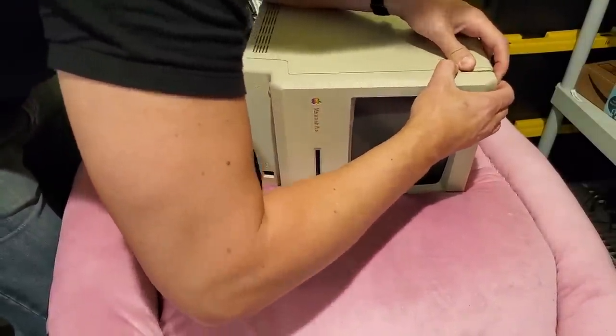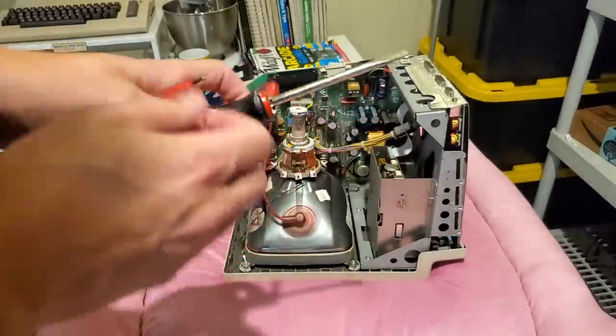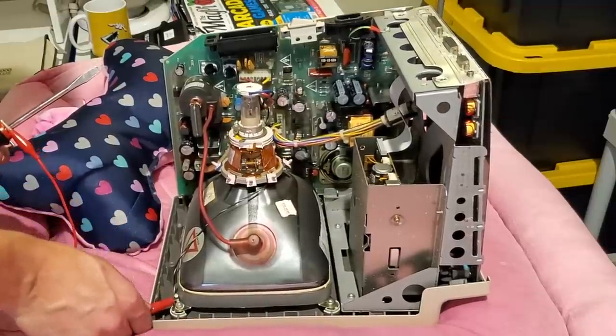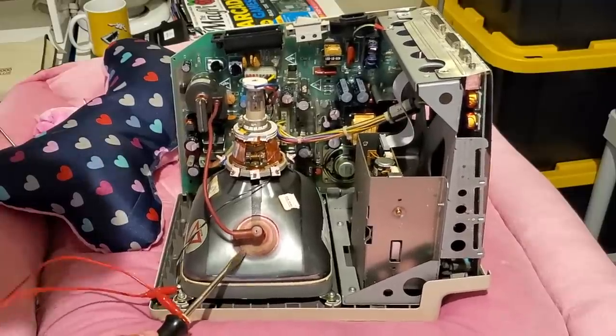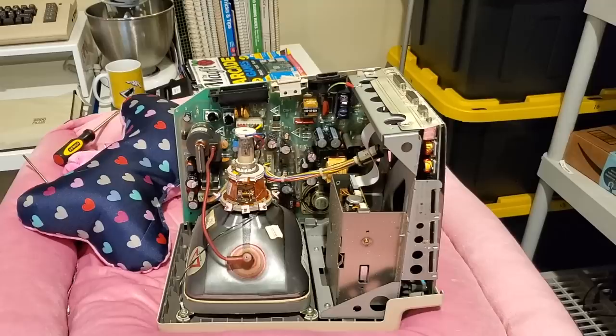But when I showed myself discharging the cathode ray tube by connecting a screwdriver to this ground lug, a few eagle-eyed viewers thought they spotted something a bit strange about my video. The power cable and therefore the ground was disconnected while I discharged it, and this led to one or two comments.